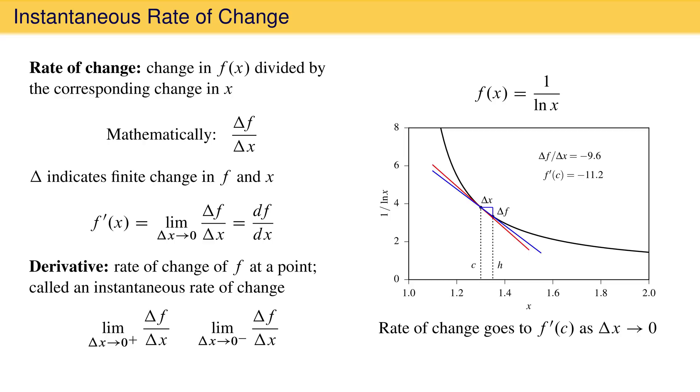We would indicate this with a superscript minus sign in the limit. For the derivative to exist at a point, the limit taken from the right must equal the limit taken from the left. If this is the case, the function is said to be differentiable at the point c.